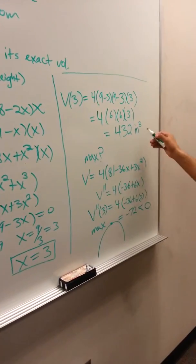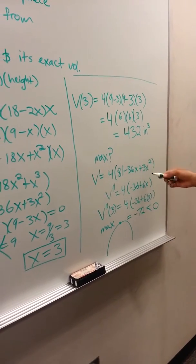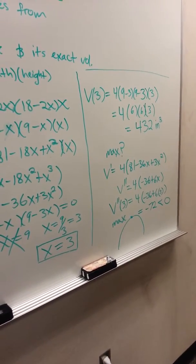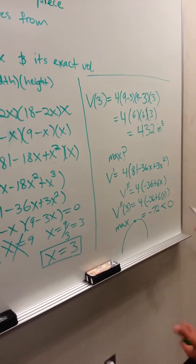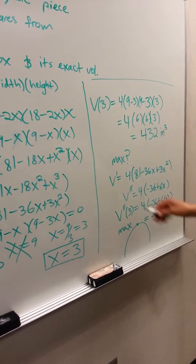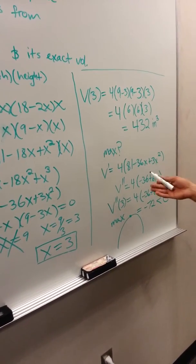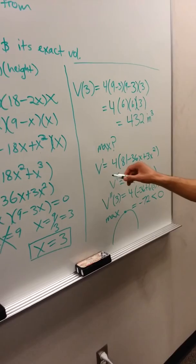You always have to remember to put your units or you could get a markdown on an exam or quiz. Now the last thing we have to do is see if this is truly a max. I took v-prime, which is 4(81 - 36x + 3x²), and took the second derivative.